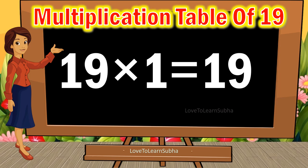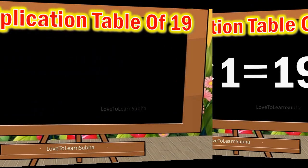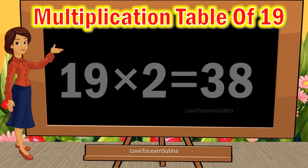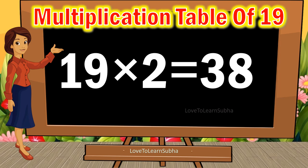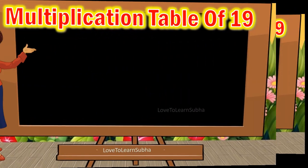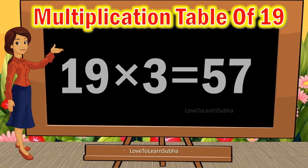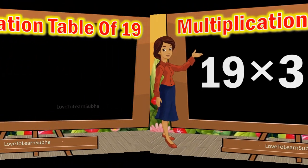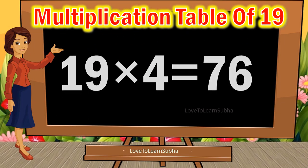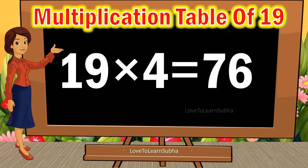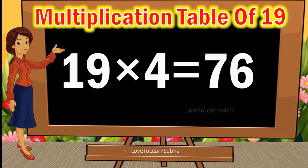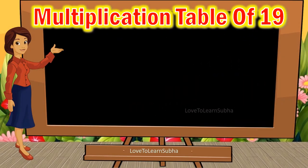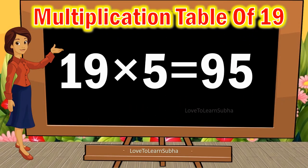Nineteen ones are 19. Nineteen twos are 38. Nineteen threes are 57. Nineteen fours are 76.